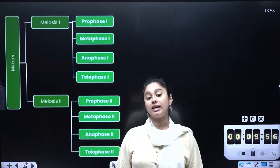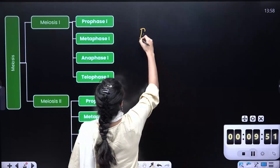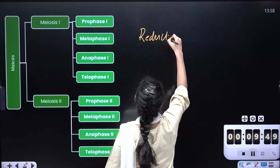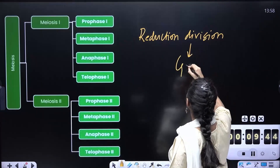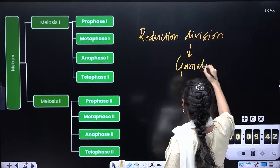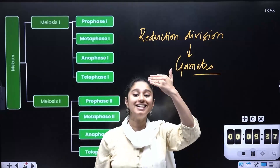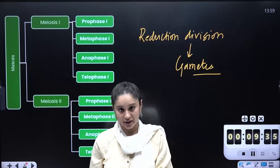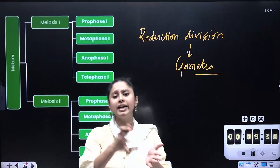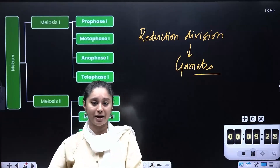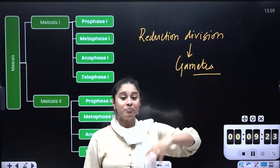Meiosis is typically called the reduction division. In the reduction division, there is a reduction in the number of chromosomes. We are going to look at gametic cells — the gametes — with respect to human beings, and the difference in the number of chromosomes. In our normal cells, the chromosome number will be doubled.